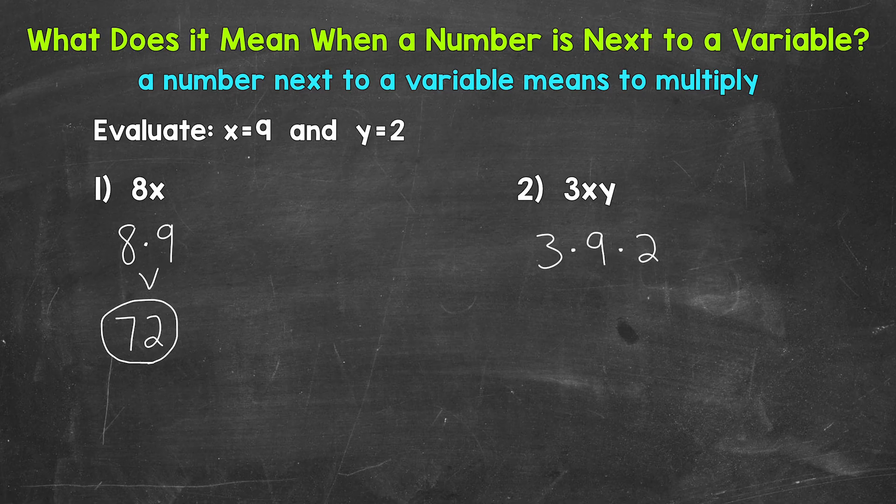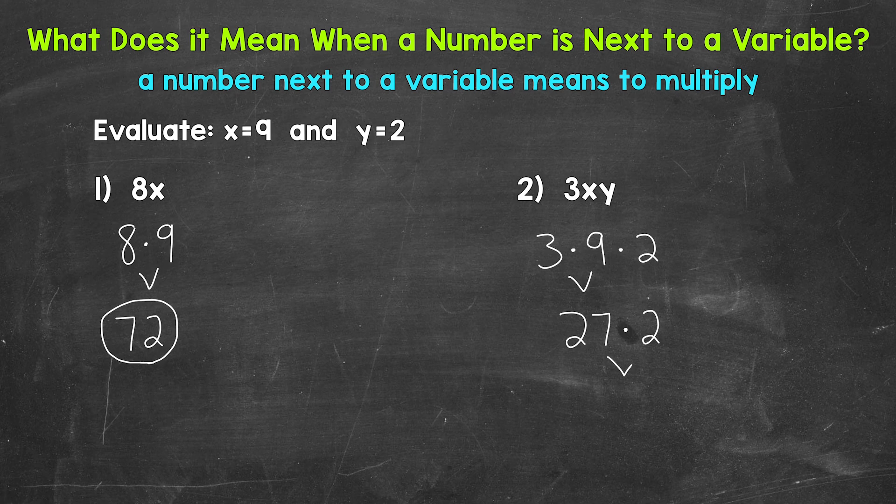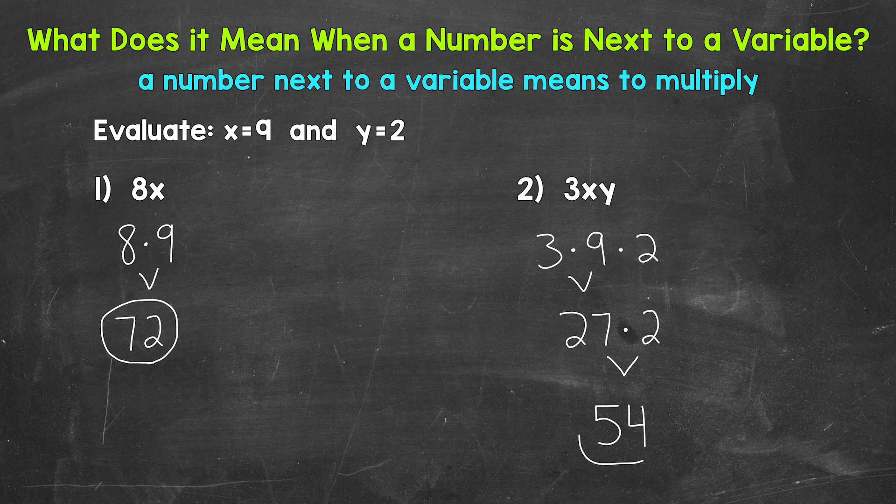Now we can multiply. And I'm going to work from left to right, starting with 3 times 9, which is 27. Bring down the multiplication sign and the 2 we did not use. We end with 27 times 2, which equals 54. The value of this expression is 54 when x equals 9 and y equals 2.